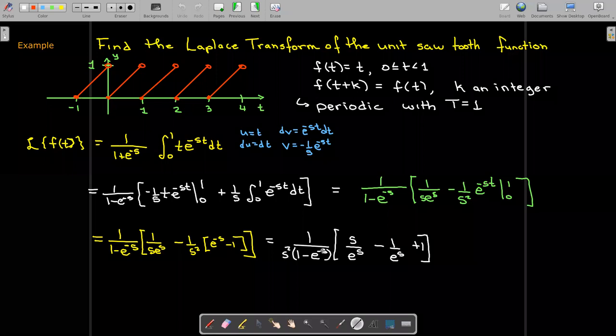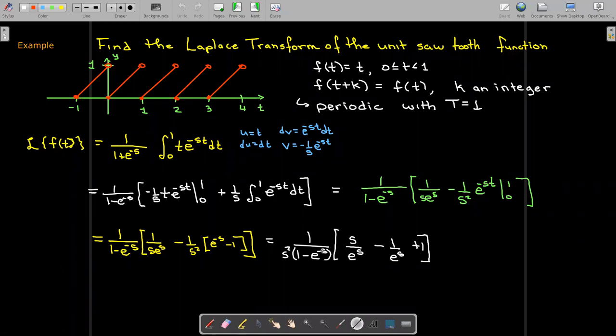and outside the brackets I have an e^(-s). That suggests we could simplify this further by multiplying by e^s over e^s.